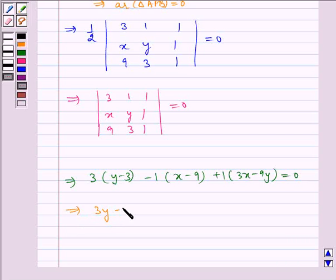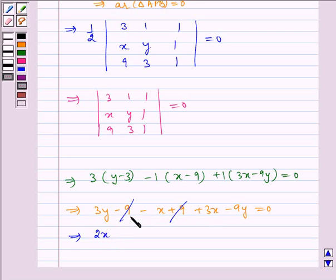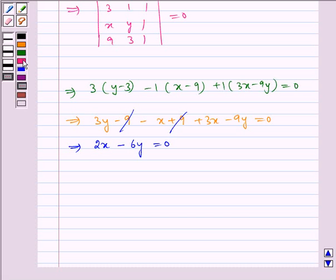Which implies 3y - 9 - x + 9 + 3x - 9y = 0, which implies combining the like terms we get -x + 3x = 2x, and 3y - 9y = -6y, which equals 0. Which implies 2x - 6y = 0, which implies x - 3y = 0.